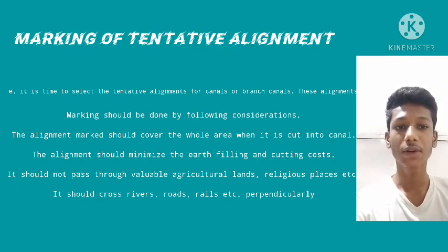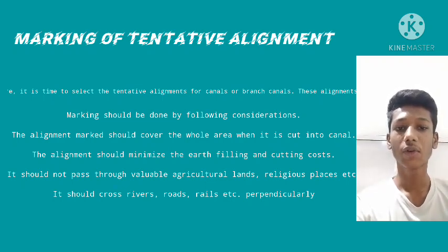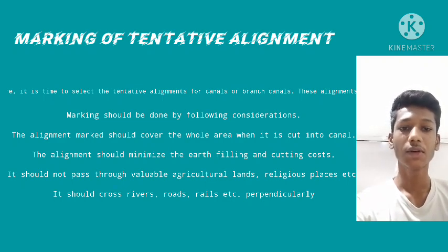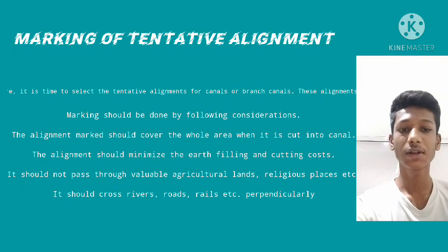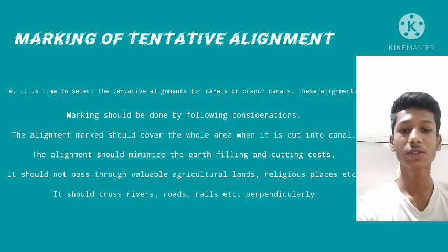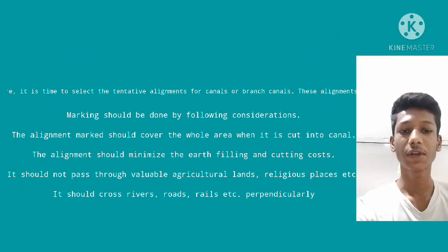Marking of tentative alignment. After the selection of the site for the irrigation structure, it is time to select the tentative alignment for canals or branch canals. The alignment should be marked on topographical and contour maps. The alignment should cover the whole command area, minimize earth filling and cutting costs, avoid valuable agricultural land and religious places, and should cross rivers, roads, and railways perpendicularly.